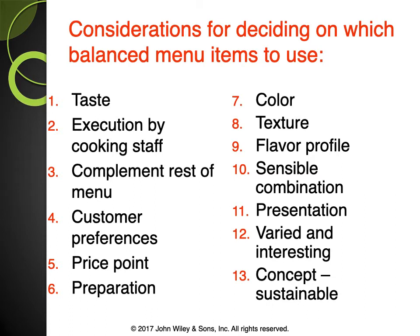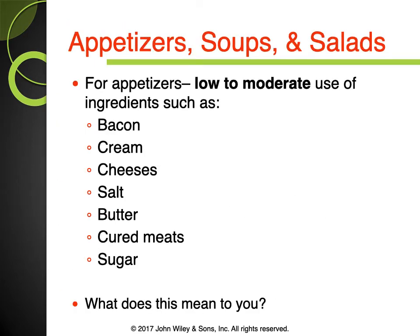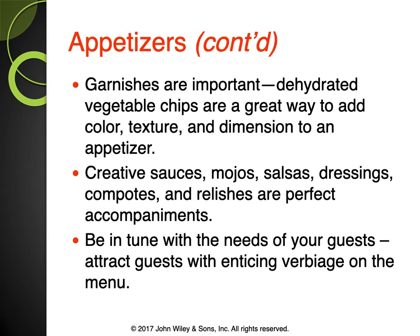For appetizers, soups, and salads, use bacon, cream cheeses, salt, butter, cured meats, and sugar in low to moderate amounts, since these ingredients are high in fat, sugar, and salt. For appetizers, garnishes are important — utilize creative sauces like mojos, salsas, dressings, and compotes to add interest.